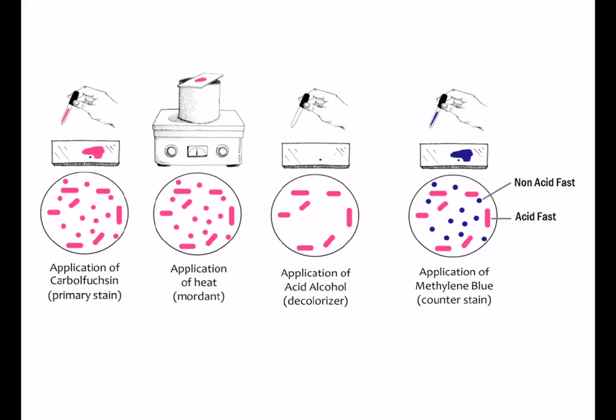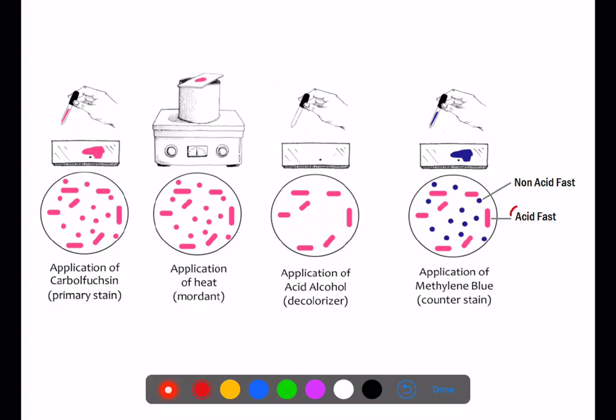Gram staining is not preferred for Mycobacterium; acid fast staining is preferred. The summary: acid fast bacteria, due to the presence of high mycolic acid content, do not get decolorized and appear bright red in color, whereas non-acid fast bacteria take up the counter stain methylene blue.